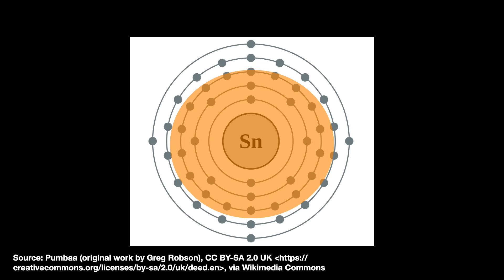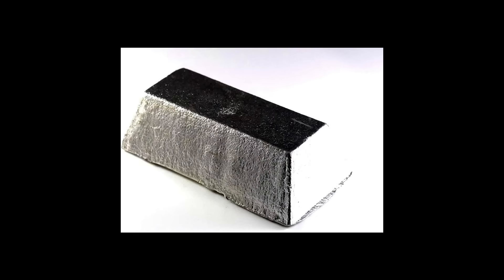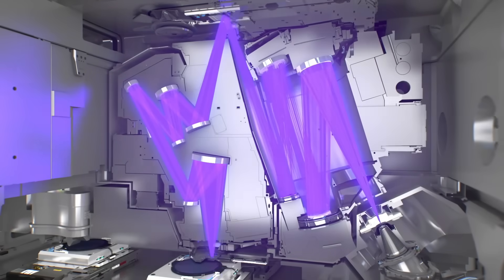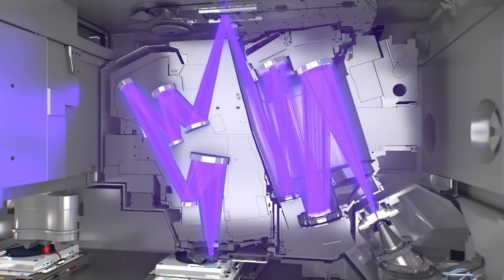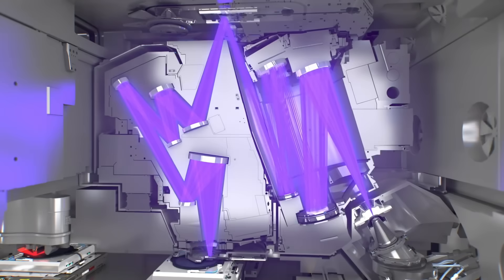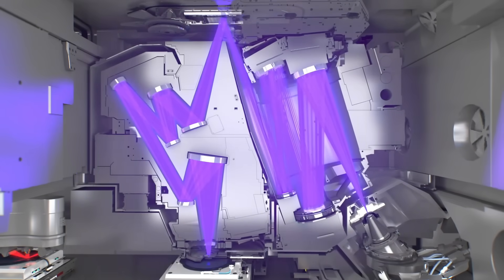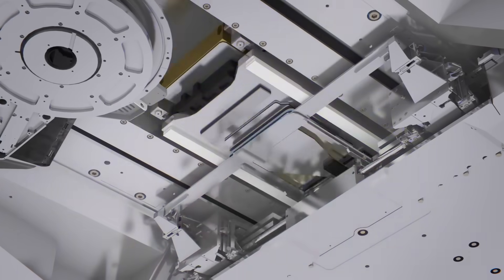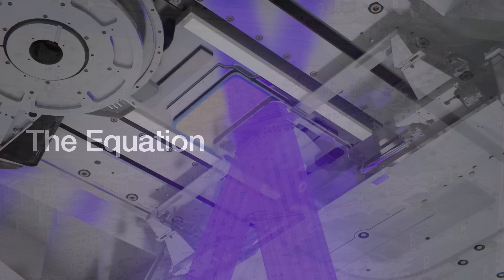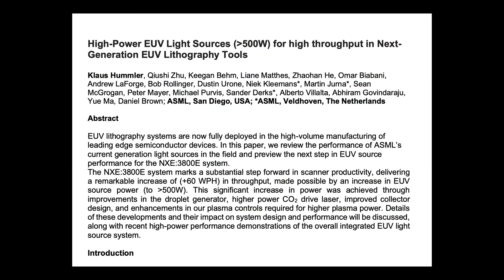The tin atom has an atomic number of 50, meaning a neutral tin atom has 50 electrons orbiting it. To start producing EUV photons, we need tin ions with 8 to 12 electrons removed. We need a high proportion of those tin ions, which by definition is a plasma. This spot of energized plasma emits the EUV light that we desire. In a 2024 presentation, ASML introduced an equation discussing how they approached the task of raising the EUV light source's power.